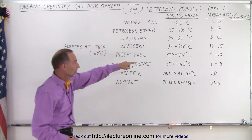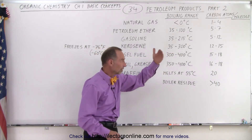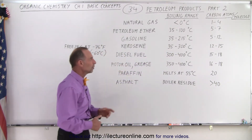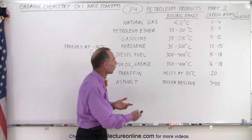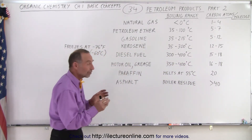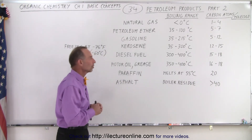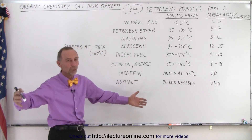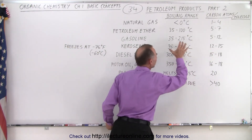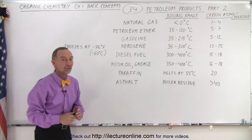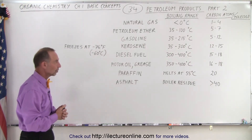Kerosene starts to boil at 35 and goes up to 300 degrees. If kerosene is in the 12 to 15 carbon range, it can still begin to boil at 35 degrees because it sometimes contains some smaller molecules. There's usually a wide range of molecules present, and those smaller ones will begin to give off fumes at these low temperatures.